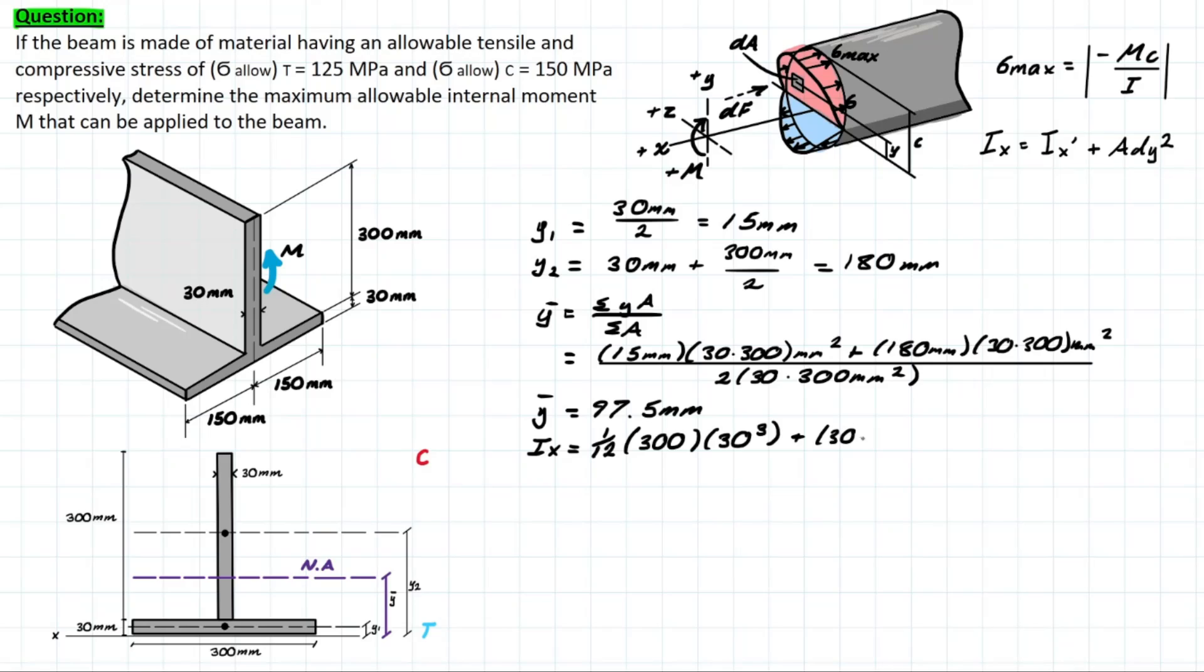The area we know is 30 times 300, and we know that this distance here is going to be y-bar minus y1 from this drawing. So we have 97.5 and we're subtracting y1, which is 15 mm, squaring that, and then moving on to the next shape. We have a very similar process here, except now the base is going to be 30 and the height is going to be 300. We have the area once again.